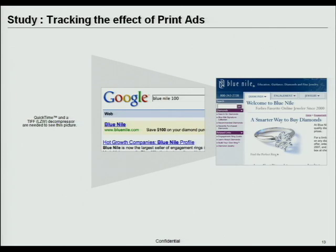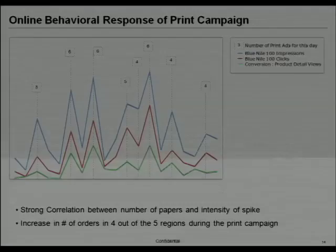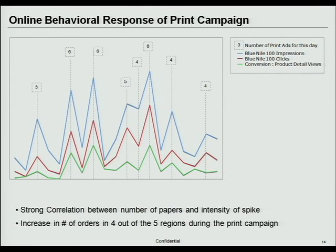Nobody else is bidding on that unique keyword, but it gave a mechanism to measure the response when they ran this ad in all these papers. We took a look at the correlation, where the blue line represents the total number of ad impressions, the red is the number of people clicking, and the green is product views. We trended that out, and it correlates very closely with all the dates that the print advertising ran.